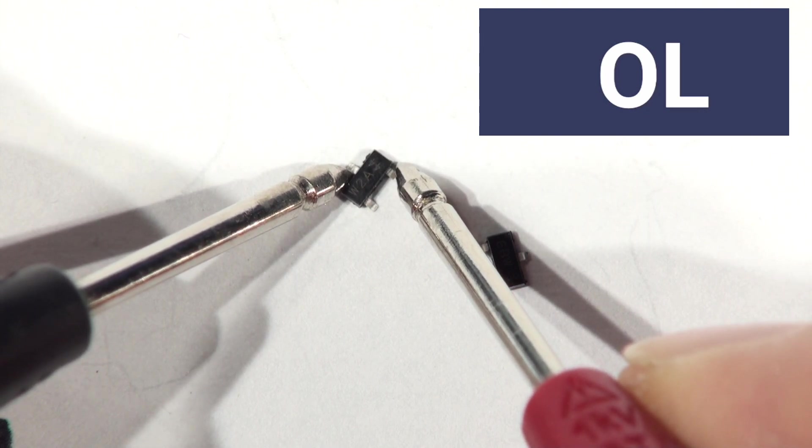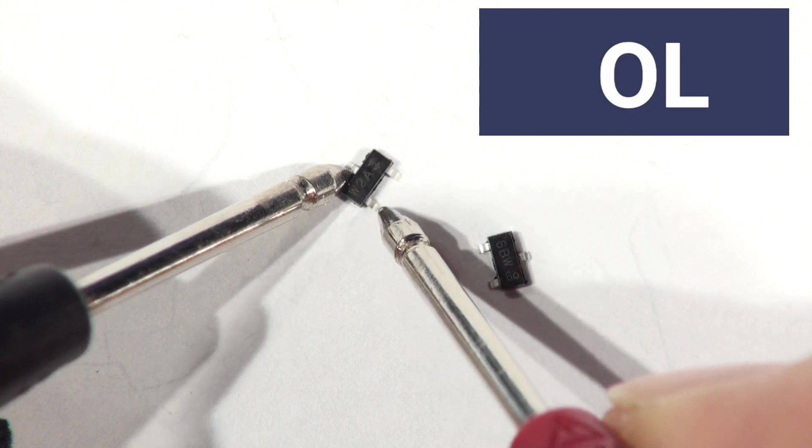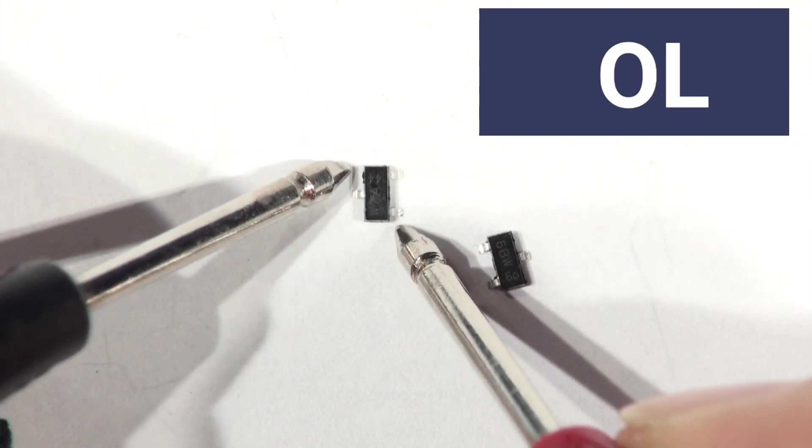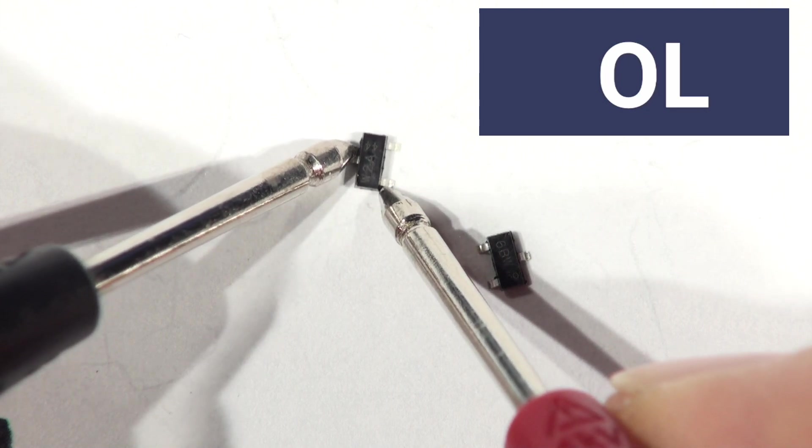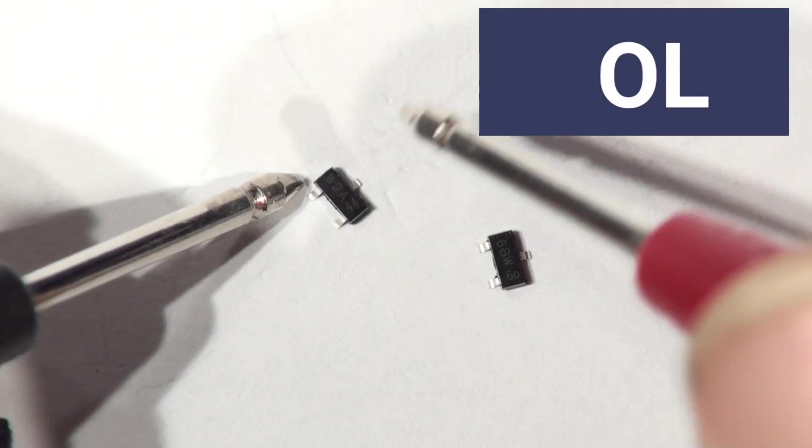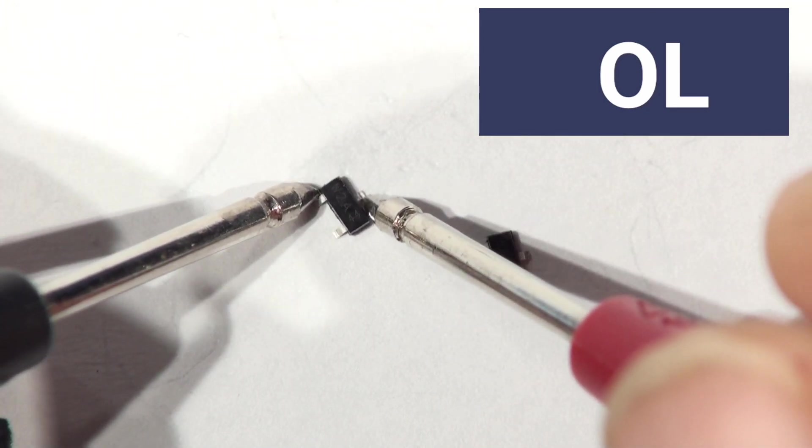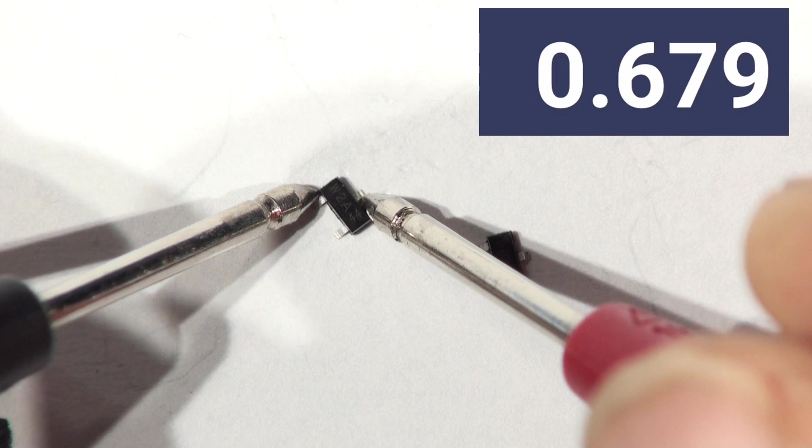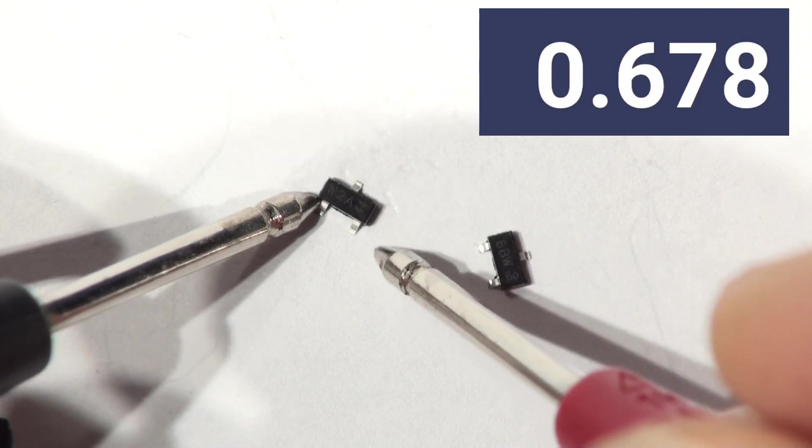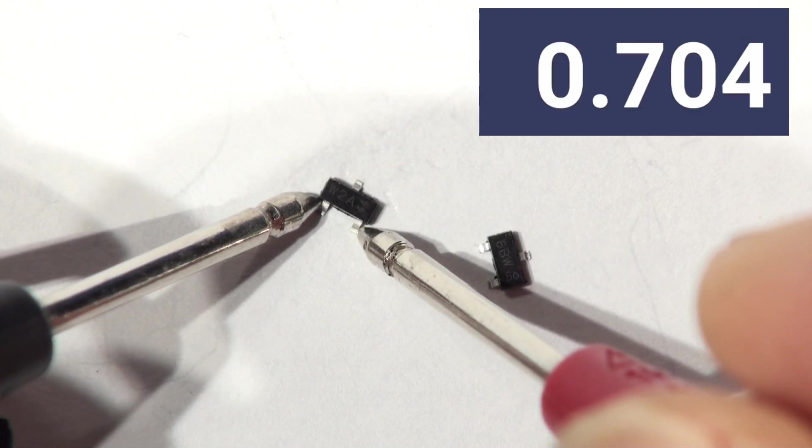So neither of those two can be the base, can they? So the base must be down here. Let's try the positive on the base. No flow. So let's try the negative on the base. So there's our 700 millivolts. So this has got the negative on the base, which is the left one. If I just go to the collector, there, you've got 700 millivolts again. So there's your two junctions.